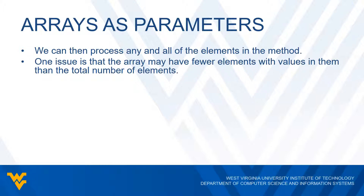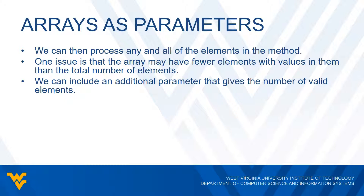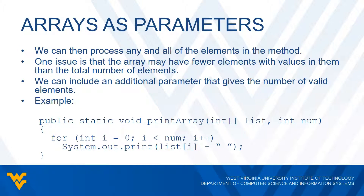One potential issue is that the array may have fewer elements with values in them than the total number of elements. This isn't just an issue with methods — in general, we may have an array of 20 elements but only want to do something with 10 of them. The way to fix this is to include an additional parameter that gives us the number of valid elements. For example, to print the contents of all valid elements, we pass the array list and an integer num, assuming the first num elements have valid values, and then print those.